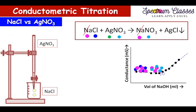As we move towards the equivalence point, the contribution at the equivalence point is just because of NaNO3, since no Ag+ and no Cl− is present up to the equivalence point. The question comes: if NaCl contribution is this much, why does the contribution of NaNO3 go down? As NaNO3 is formed within the solution, it remains there in Na+ and NO3− form.